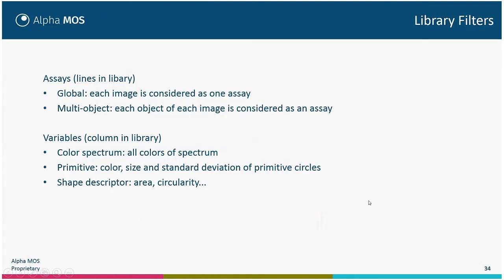The library filters allow statistical analysis of the different images. In Global mode, each image is considered as one assay. In Multi-Object mode, each object in each image is considered as a separate assay. If you have 20 different pistachios in an image, you will have 20 different assays — different objects that will be analyzed in the library for statistical analysis. The statistics will be done on each pistachio individually.